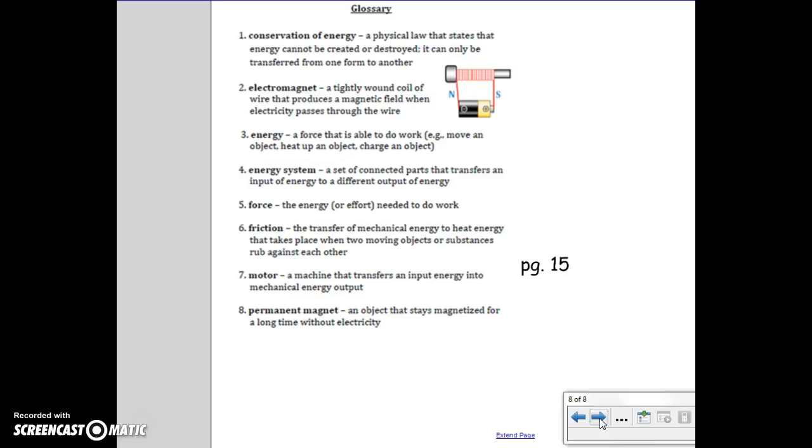Seven, motor: A machine that transfers an input energy into mechanical energy output. Eight, permanent magnet: An object that stays magnetized for a long time without electricity. So, let's turn off. Thank you.